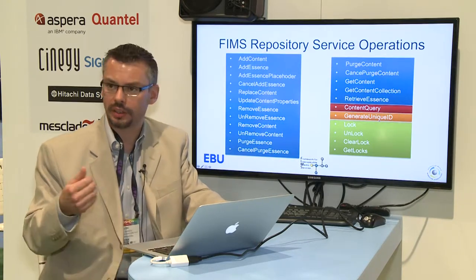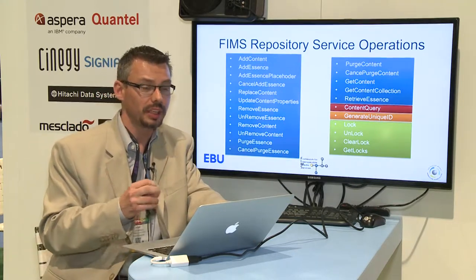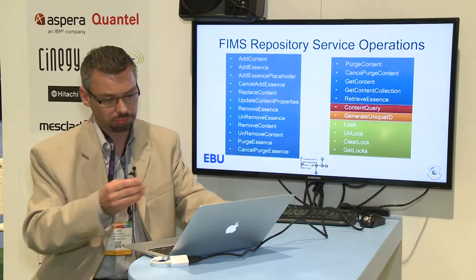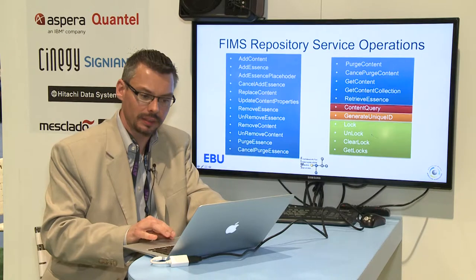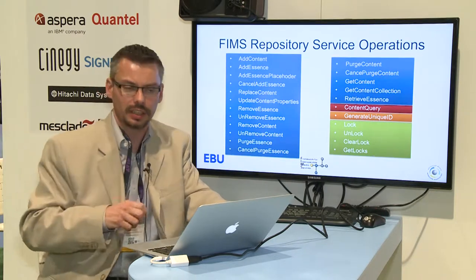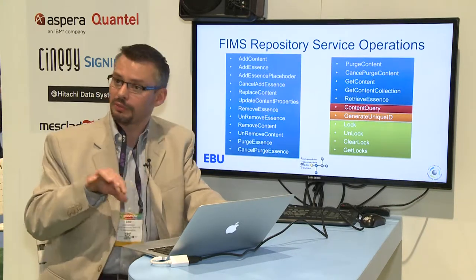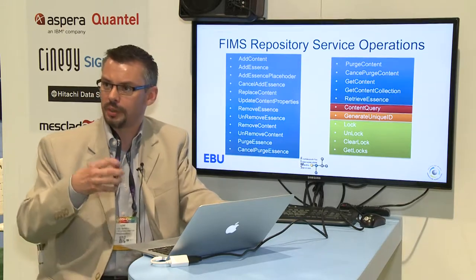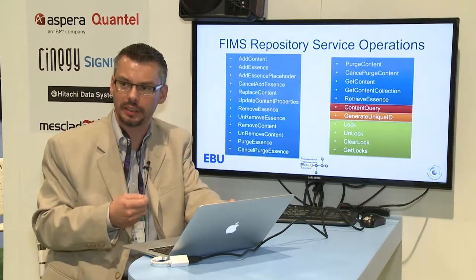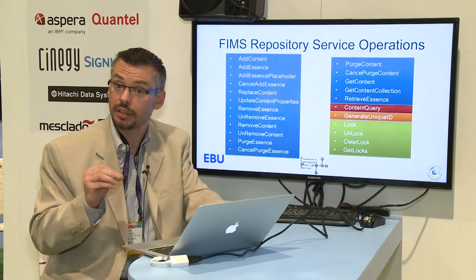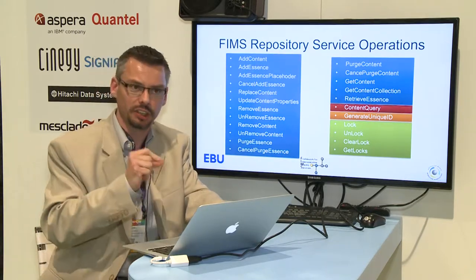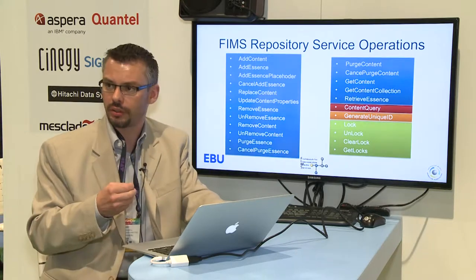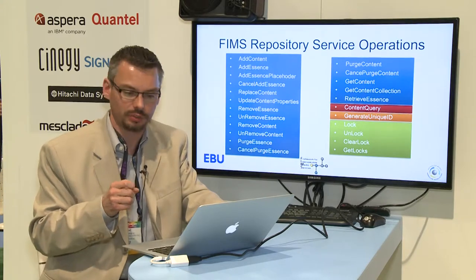The generic unique ID operation is not required — if you already generate unique identifiers for your content, you can use what you have; otherwise you can use the operation that comes with the service. There are also more advanced operations for locking and unlocking content. Since we're dealing with objects, not files, a workflow can state that content is being used by a given task and lock it. Not all repository implementations will support locking, and that's a feature you can enable or disable within the Repository Capability Registry during your implementation.